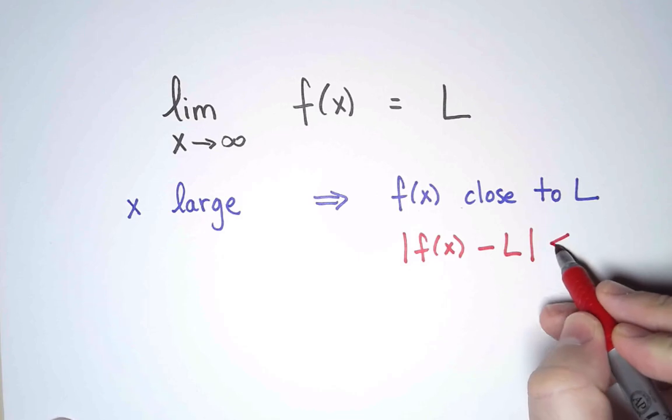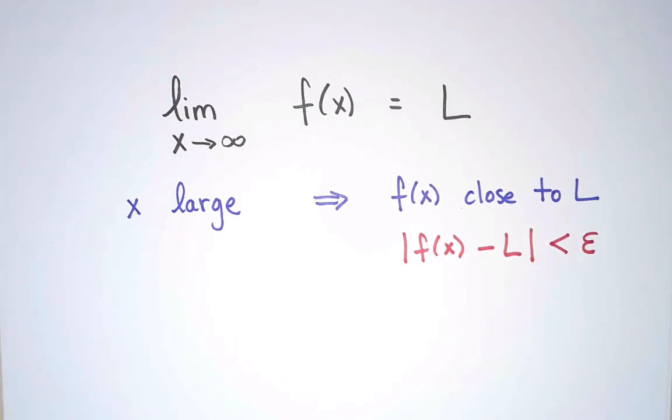The distance between f and L is the absolute value of their difference. And to say that this quantity is small, I say that it is smaller than ε, where ε is probably some small number, some cutoff. I am going to have to explain what I mean by ε exactly in a moment.